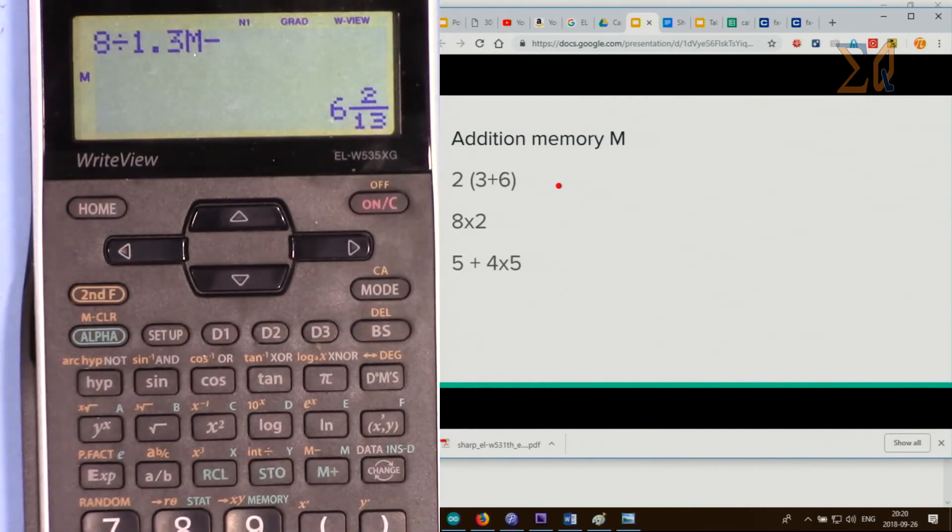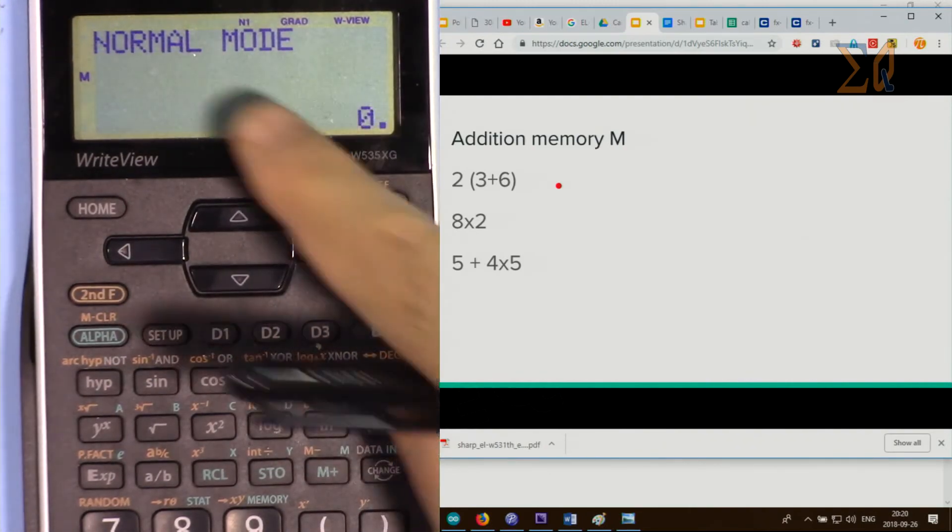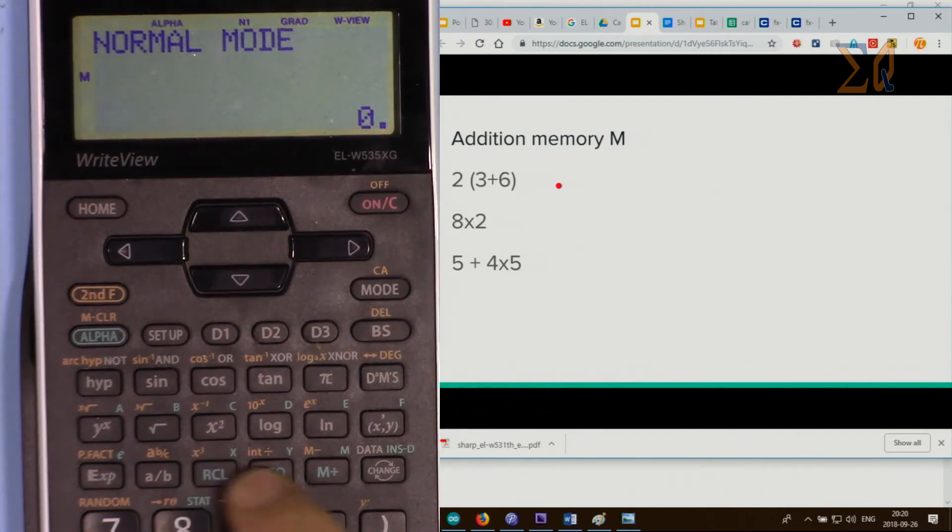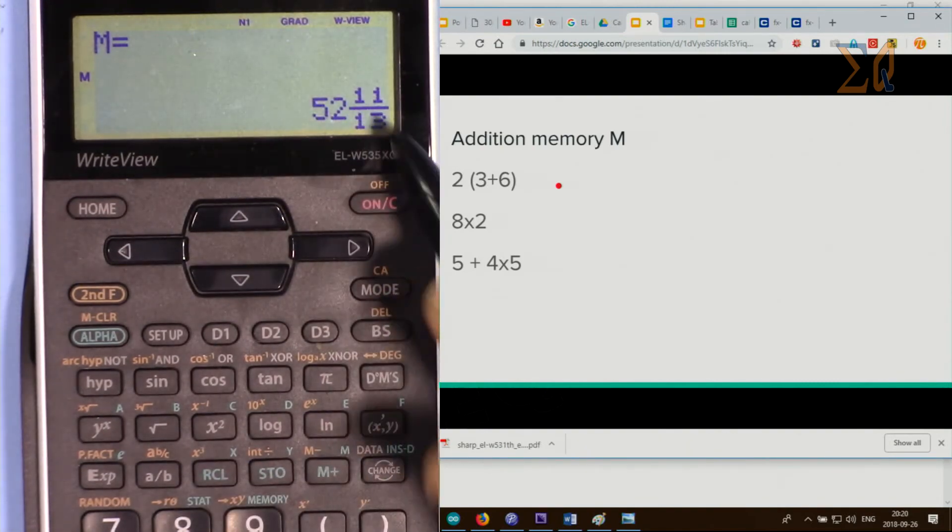If you want to see the final result, just press recall and M, and this is the final result of calculation.